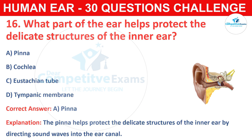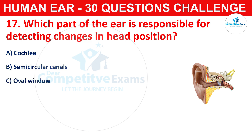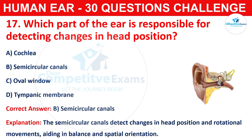Question number seventeen: which part of the ear is responsible for detecting changes in head position? Your options are cochlea, semicircular canals, oval window, or tympanic membrane. The correct answer is B, that is semicircular canals. The semicircular canals detect changes in head position and rotational movements, aiding in balance and spatial orientation.